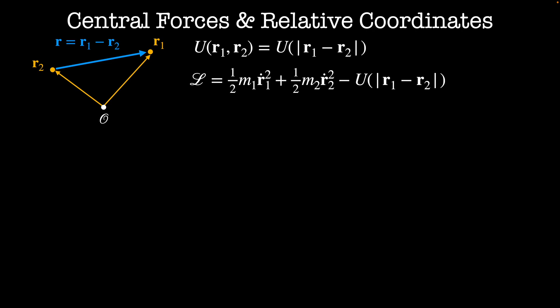In these coordinates, the Lagrangian is given by 1/2 m1 r1 dot squared plus 1/2 m2 r2 dot squared minus the potential energy. Remember, we're free to choose any coordinates that we'd like with Lagrangian systems. So perhaps another set of coordinates would be better.